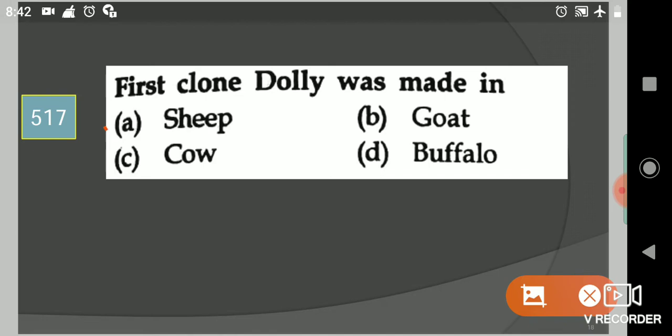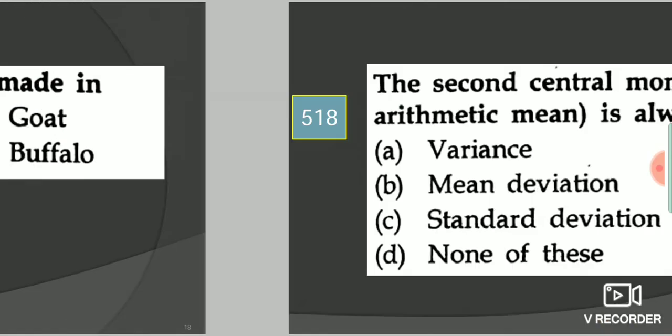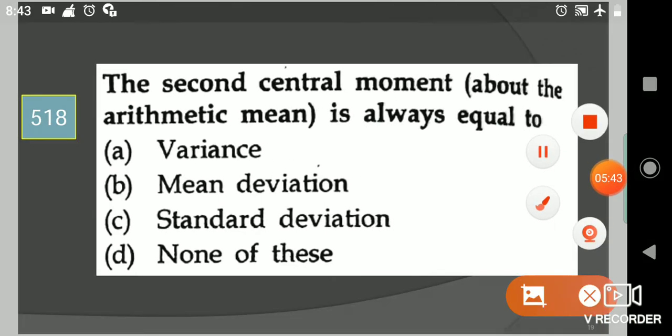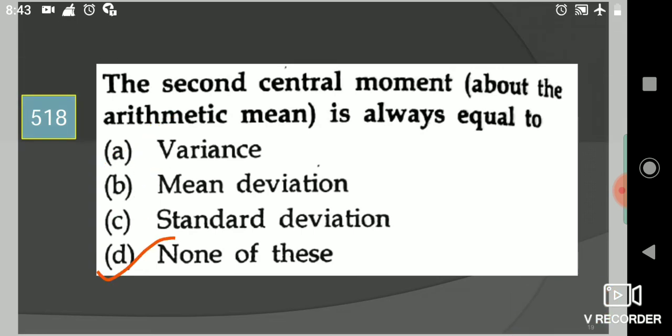Next question: The second central moment about the arithmetic mean is always equal to? Your options are variance, mean deviation, standard deviation, none of these. Your answer is option A, variance.